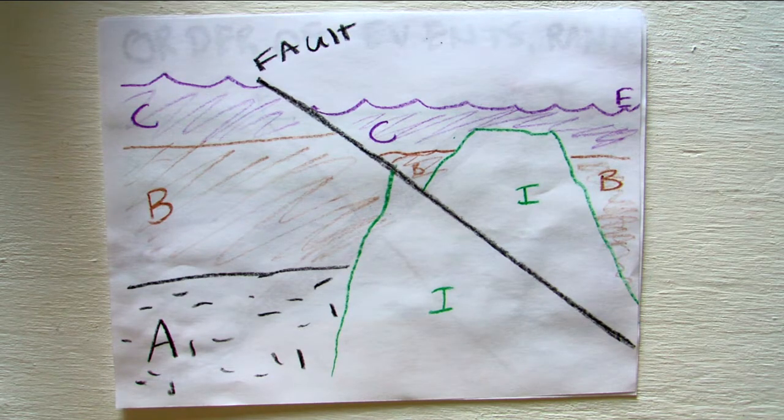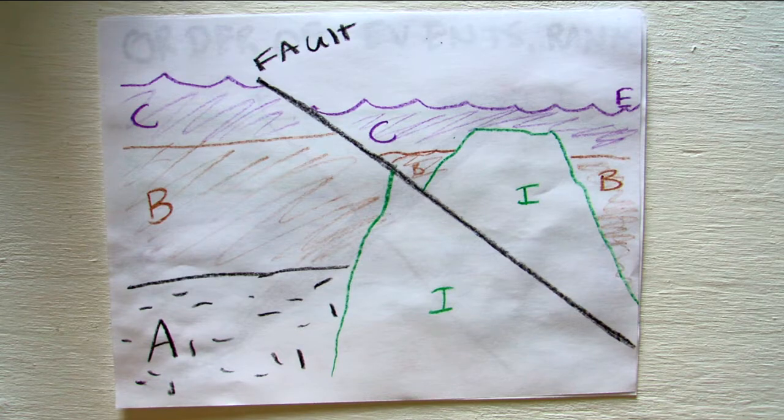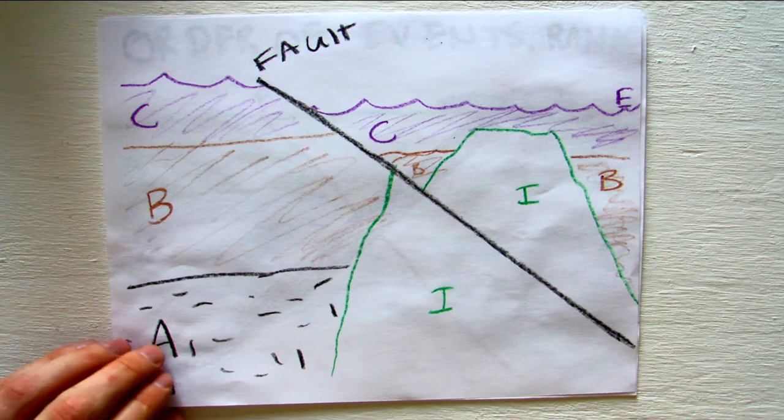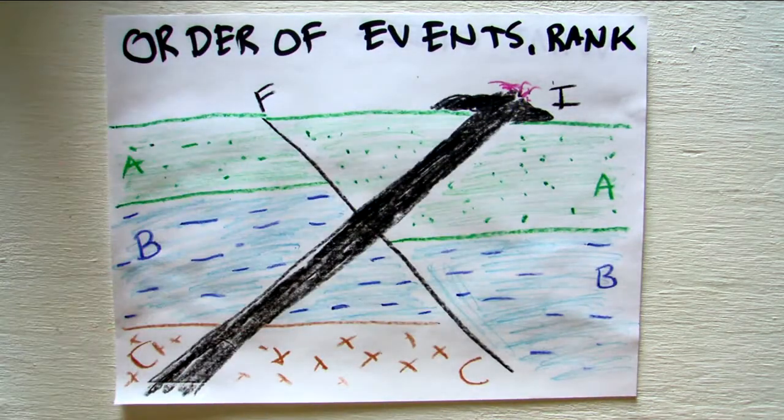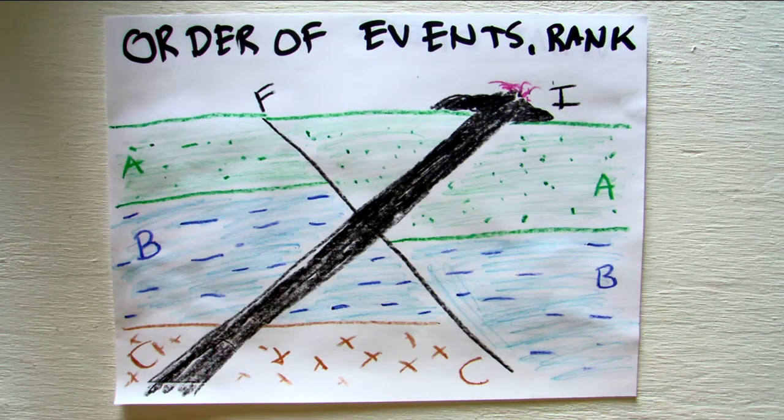That is the cross cutting relationship. The youngest things will be doing the cutting. The oldest things will be the things that are cut. Now, here is a practice problem you can try out on your own.